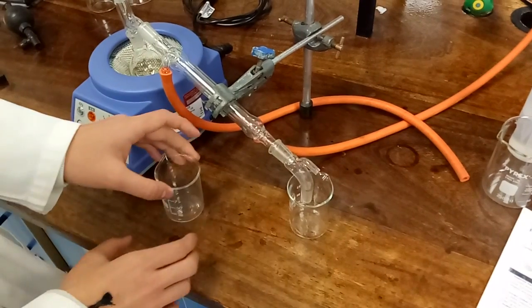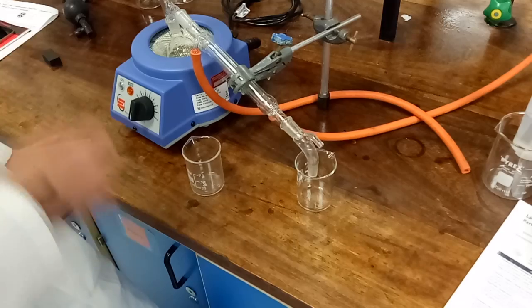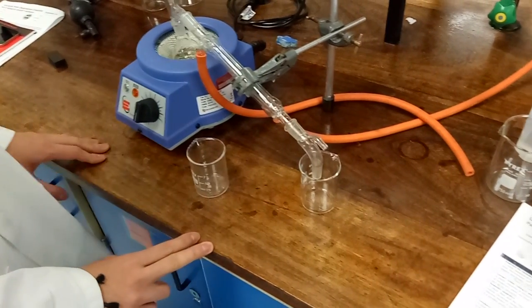We put the first flask to the side to allow it to cool to room temperature and then start collecting the second fraction.